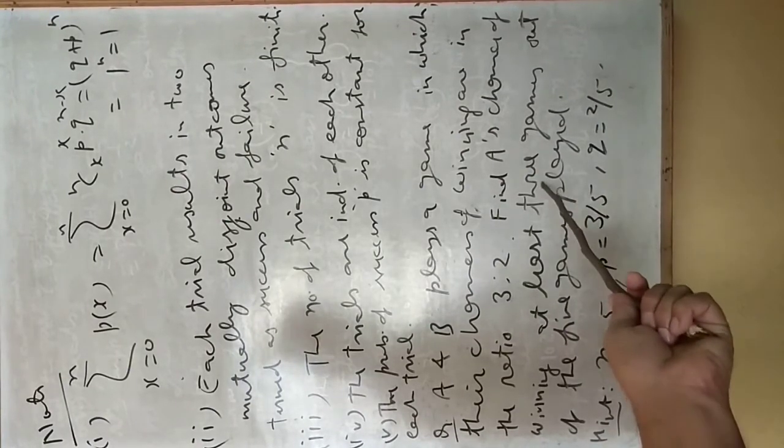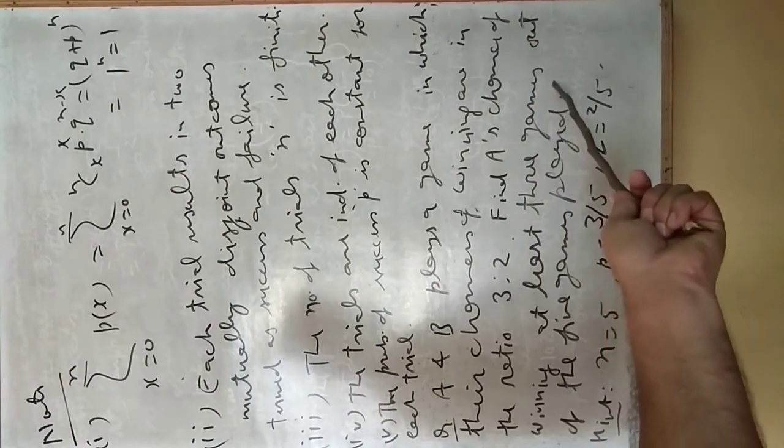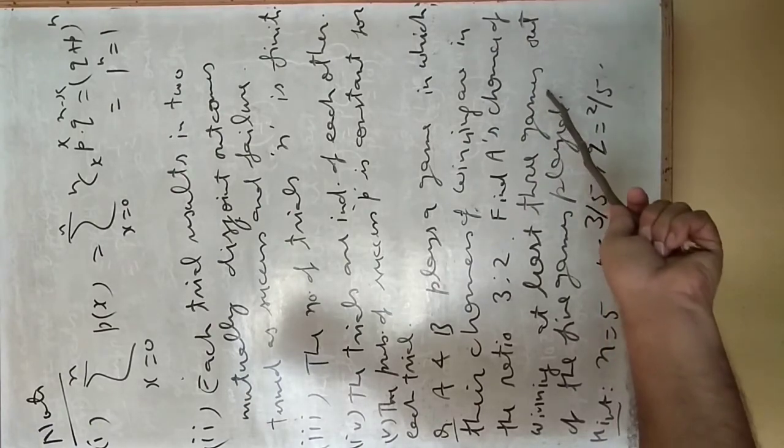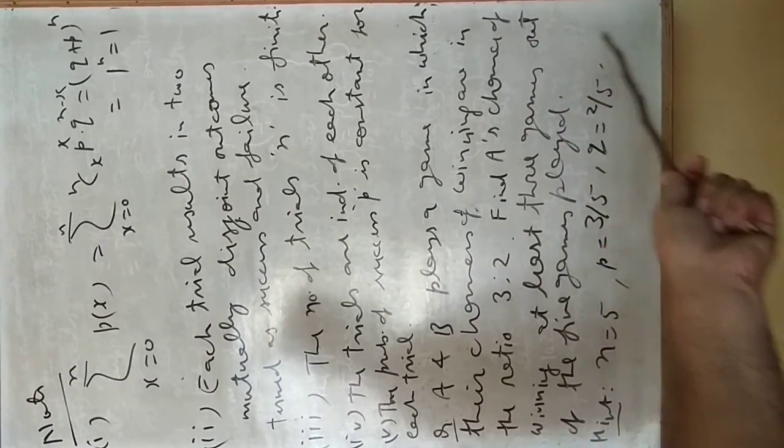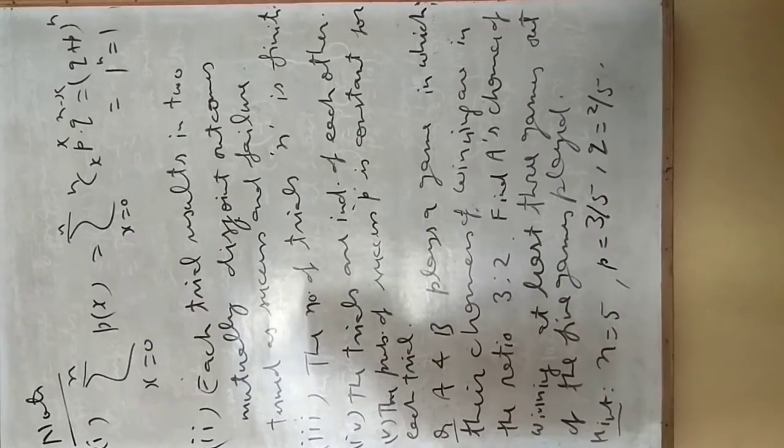So we need to find the probability that x is greater than or equal to three, which means probability x equals three plus probability x equals four plus probability x equals five. Solve this.